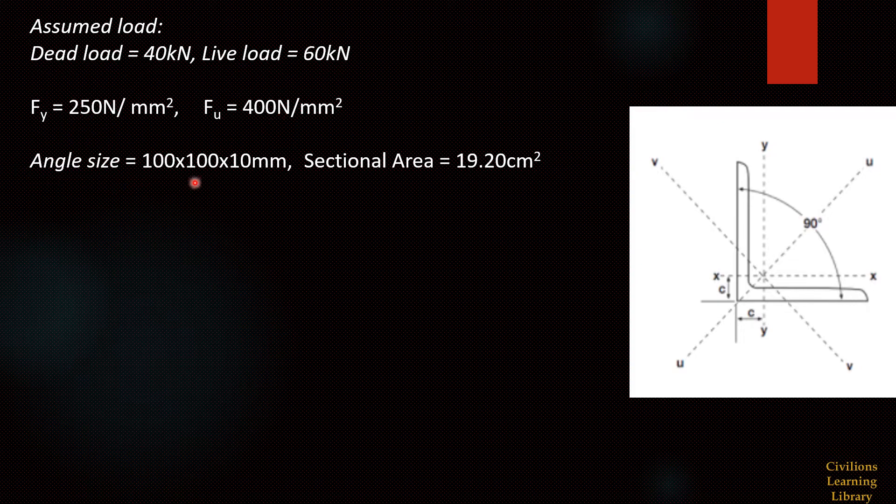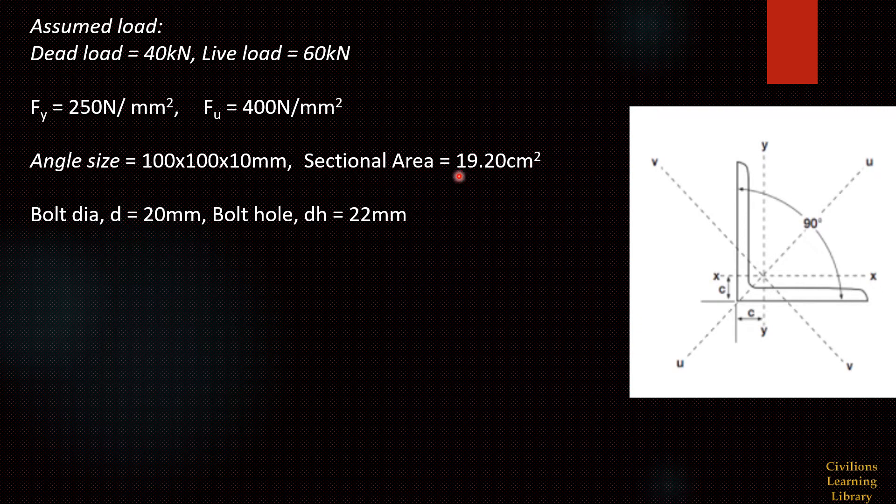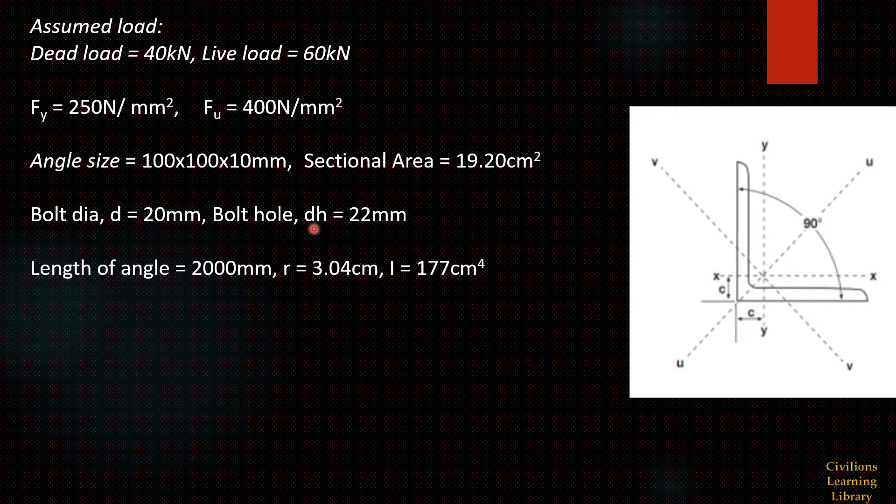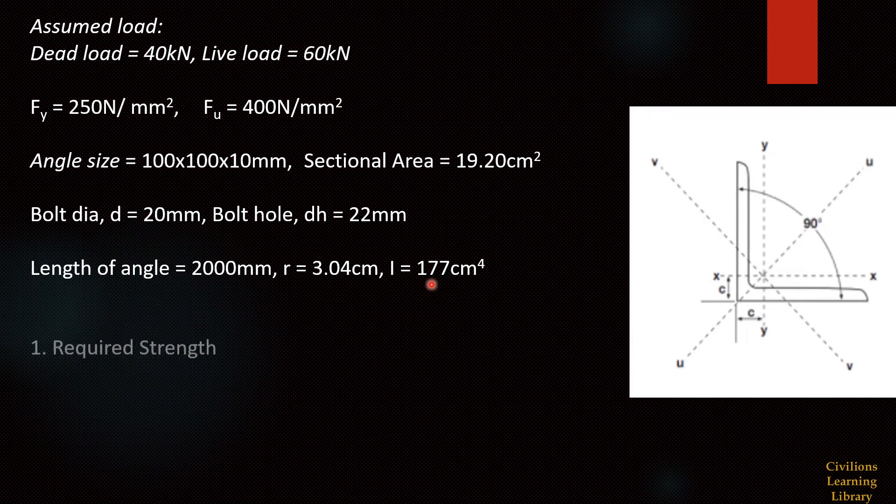We are taking the angle size 100 by 100 by 10 mm. Gross area of this angle is 19.2 cm², bolt diameter is 20 mm, bolt hole is 22 mm. We are assuming that this angle length is 2 m and the radius of gyration of 100 by 100 angle is 3.04 cm and the inertia of angle is 177 cm⁴.